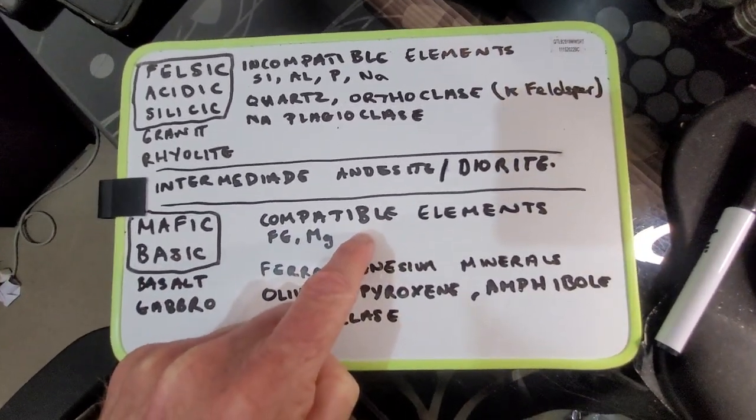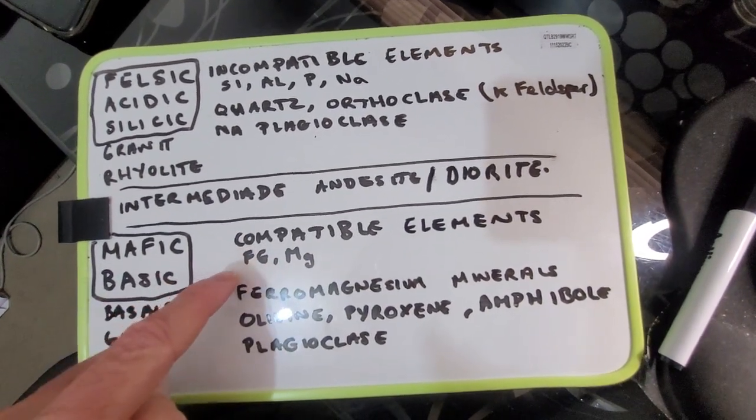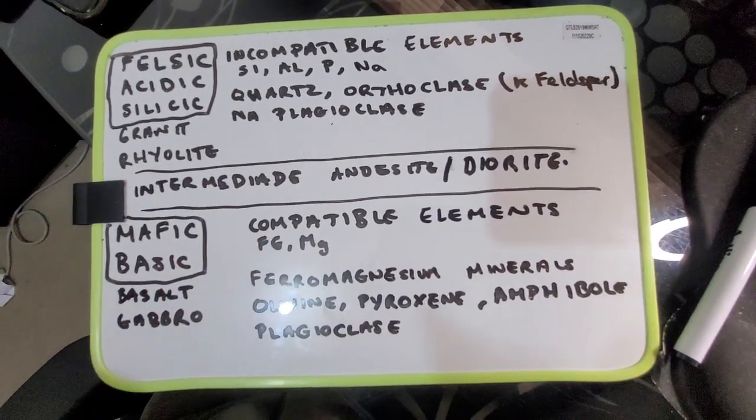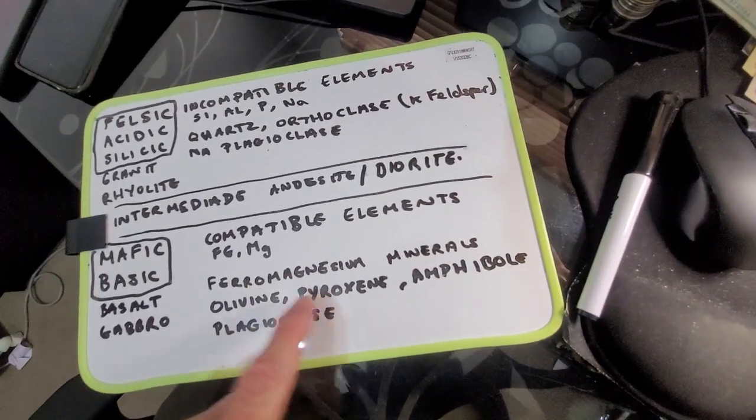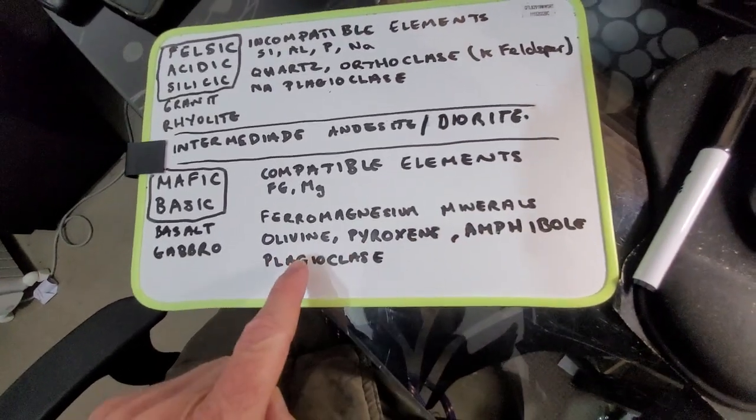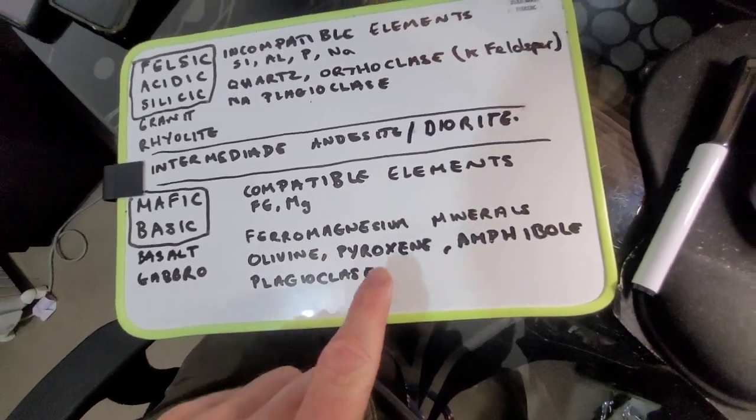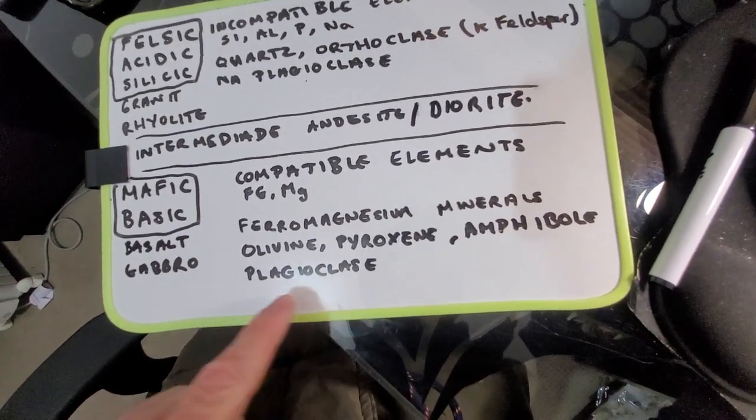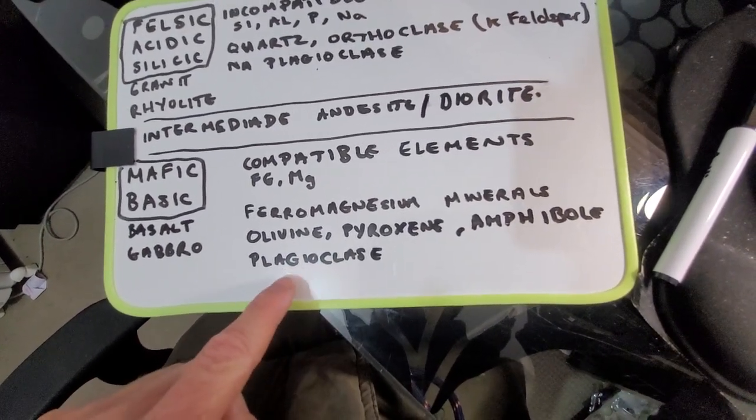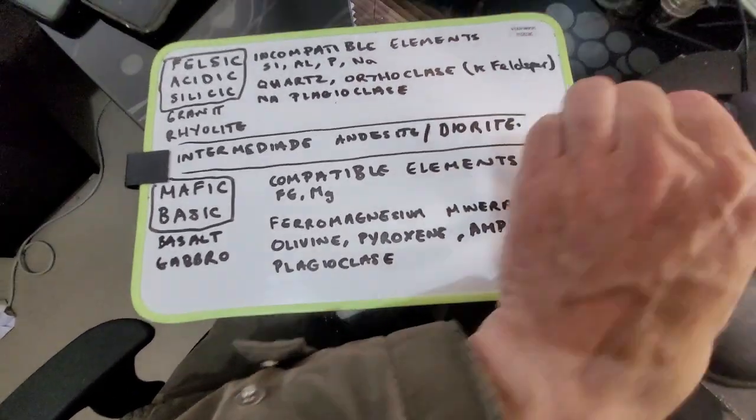Compatible elements are elements that easily make crystal forms. Most of them are iron and magnesium, but you have other elements like zinc. Ferromagnesium minerals include olivine, pyroxene, amphibole, and plagioclase - that would be calcium-rich plagioclase.